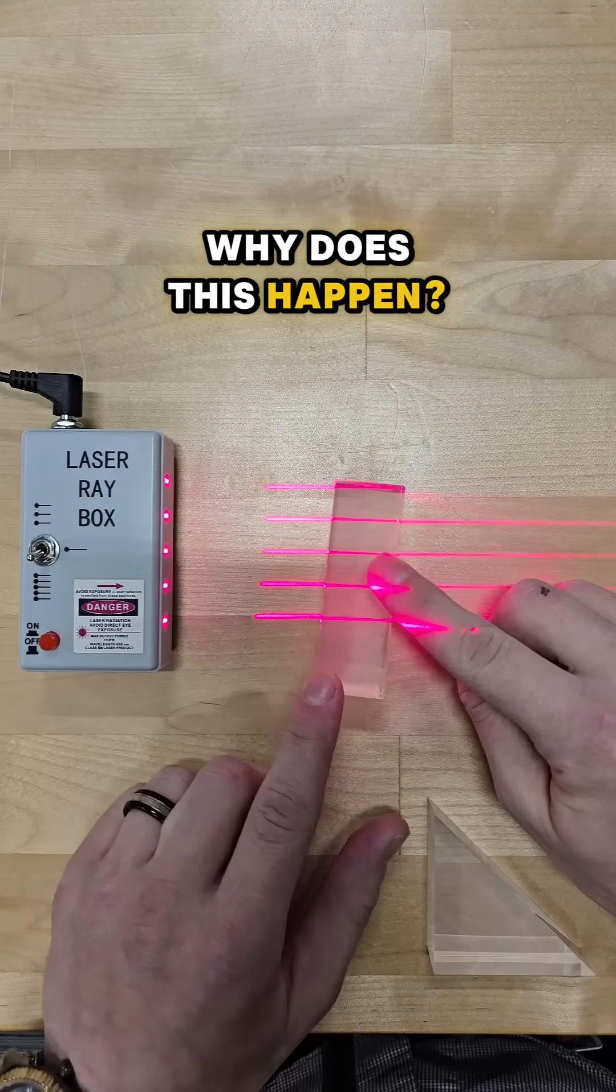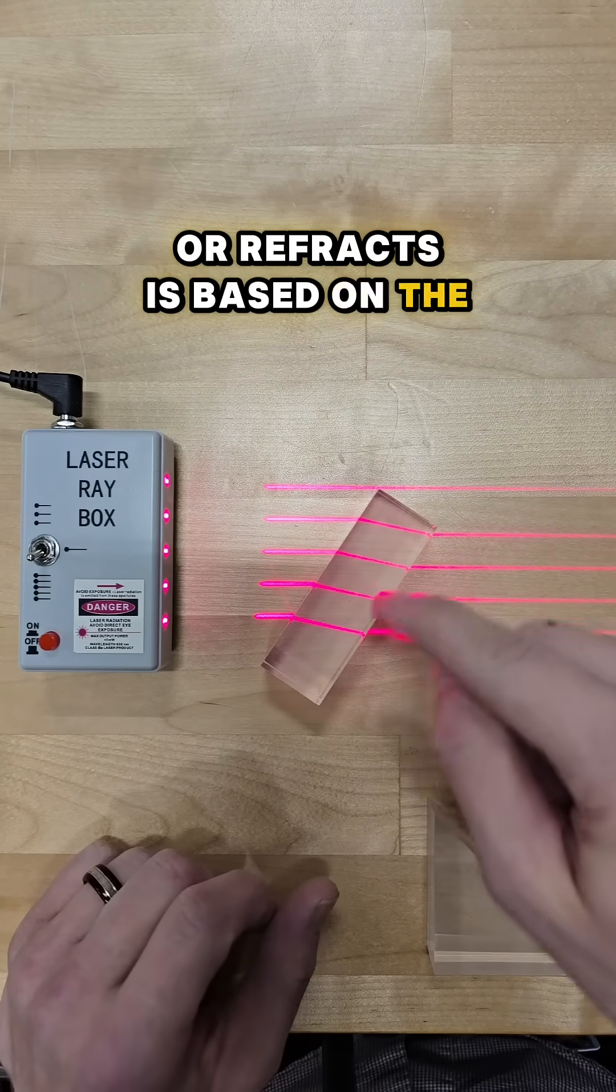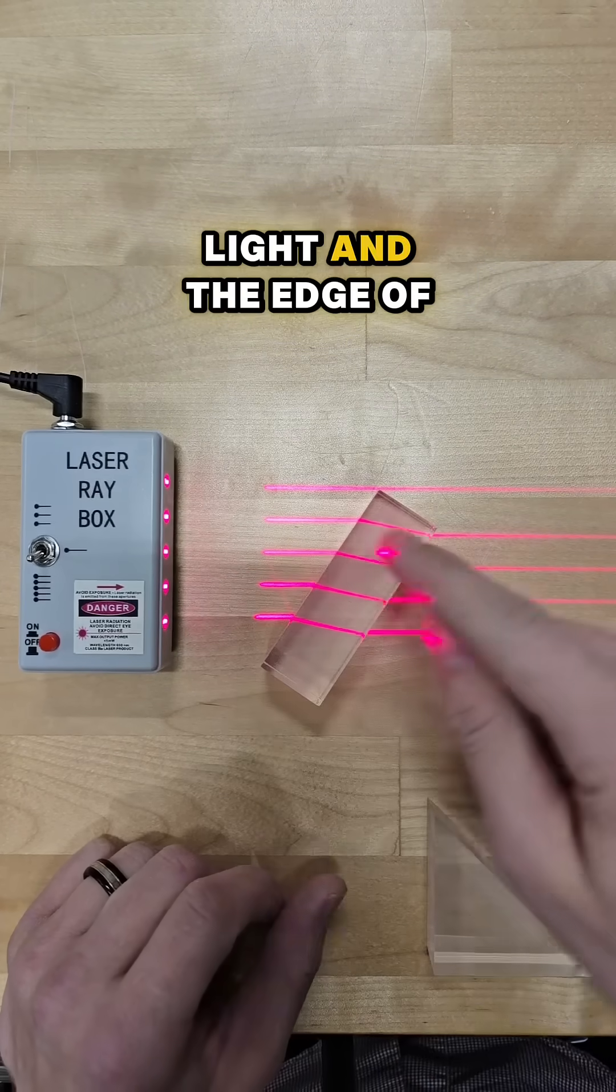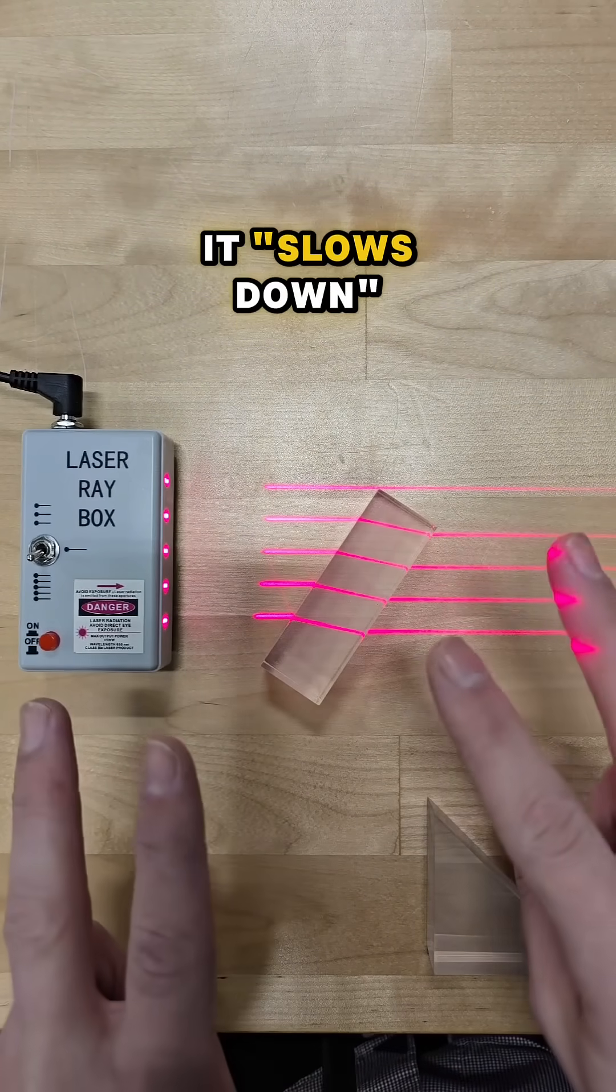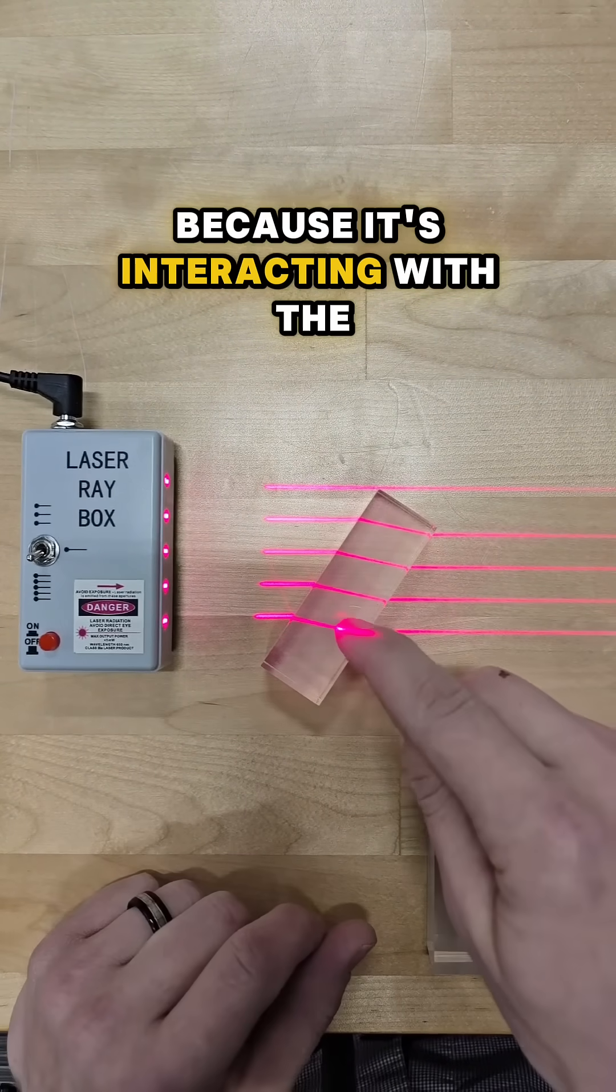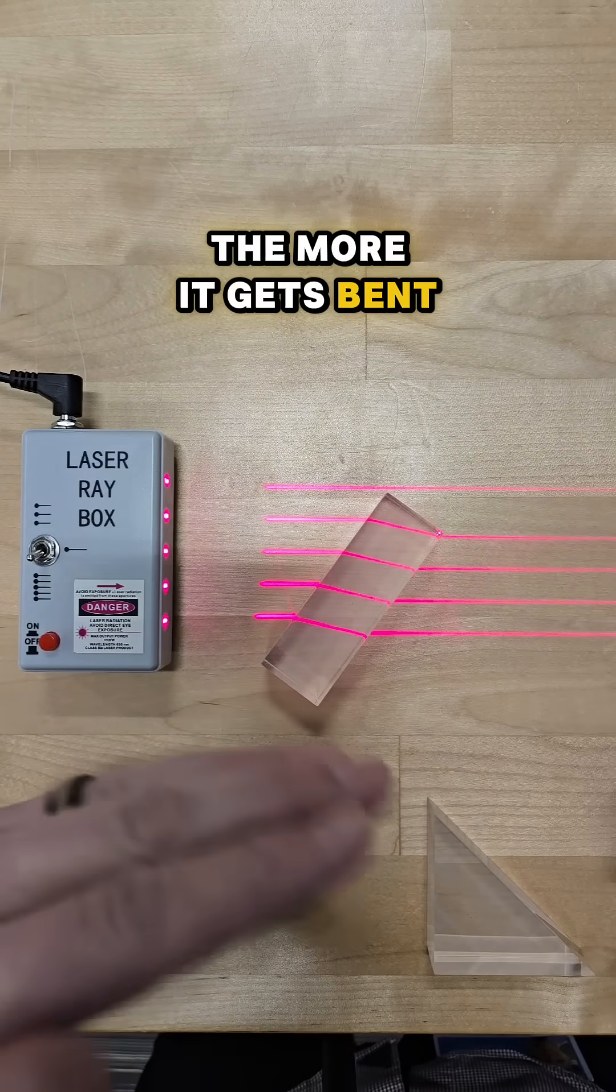Why does this happen? The angle that light bends or refracts is based on the glass material and the angle between the light and the edge of the glass. So when light enters glass, it slows down because it's interacting with the particles inside of this glass. The more it slows down, the more it gets bent.